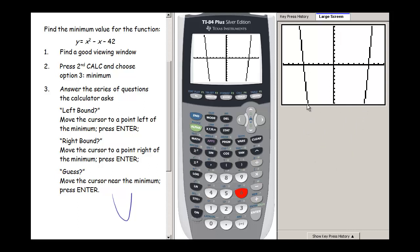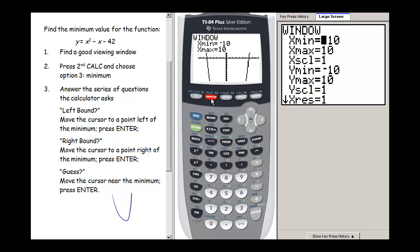Let's see if we can alter this preset window to make it work for us. So I need to see a lower y value. If I press window, I need to alter this y min. I know that it's going to be at least negative 42, so let's go down to say negative 60.